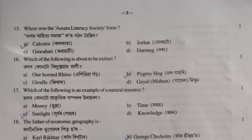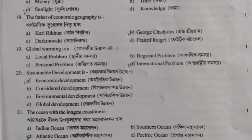Question 17: which of the following is an example of a natural resource? Option C, correct — sunlight. Question 18: who is the father of economic geography? Option B, correct — George Chisholm.